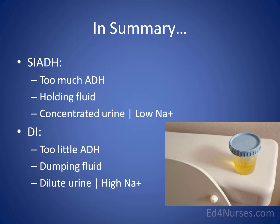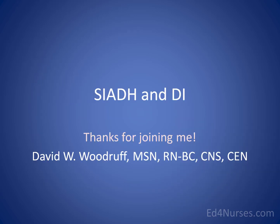In summary: SIADH is caused by too much antidiuretic hormone — the patient hangs onto fluid, has concentrated urine, and a low sodium. Diabetes insipidus is caused by too little antidiuretic hormone — the patient dumps fluid, has dilute urine, and a high serum sodium. To find these problems, look at the urine concentration and the serum sodium. Thank you for joining me — go to ed4nurses.com to find out more.